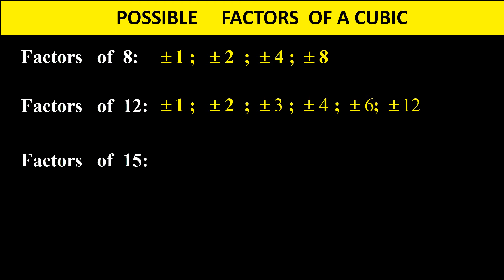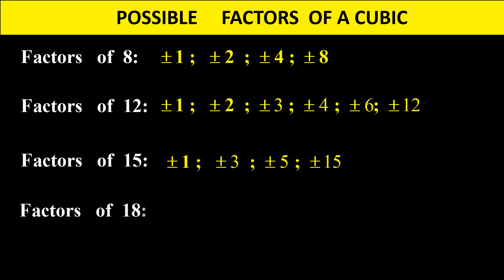Factors of 15: plus or minus 1, plus or minus 3, plus or minus 5, and plus or minus 15. Factors of 18: plus or minus 1, plus or minus 2, plus or minus 3, plus or minus 6, plus or minus 9, or plus or minus 18. It's important that you know what the factors of a constant number are.